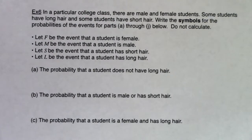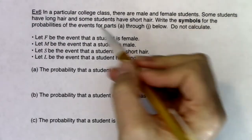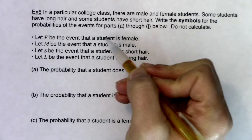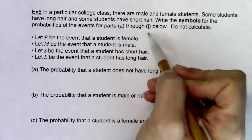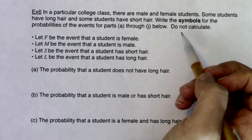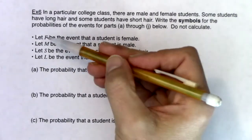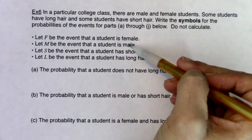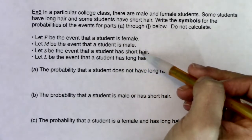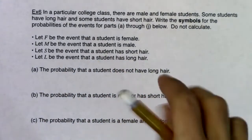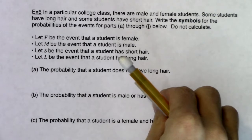In a particular college class there are male and female students. Some students have long hair and some students have short hair. Write the symbols for the probabilities of events A through J below — there's nothing to calculate, I gave you no numbers, all we're going to do is work on symbols. F is the event that the student is female, M is the event that the student is male, S is the event that the student has short hair, and L is the event that the student has long hair.